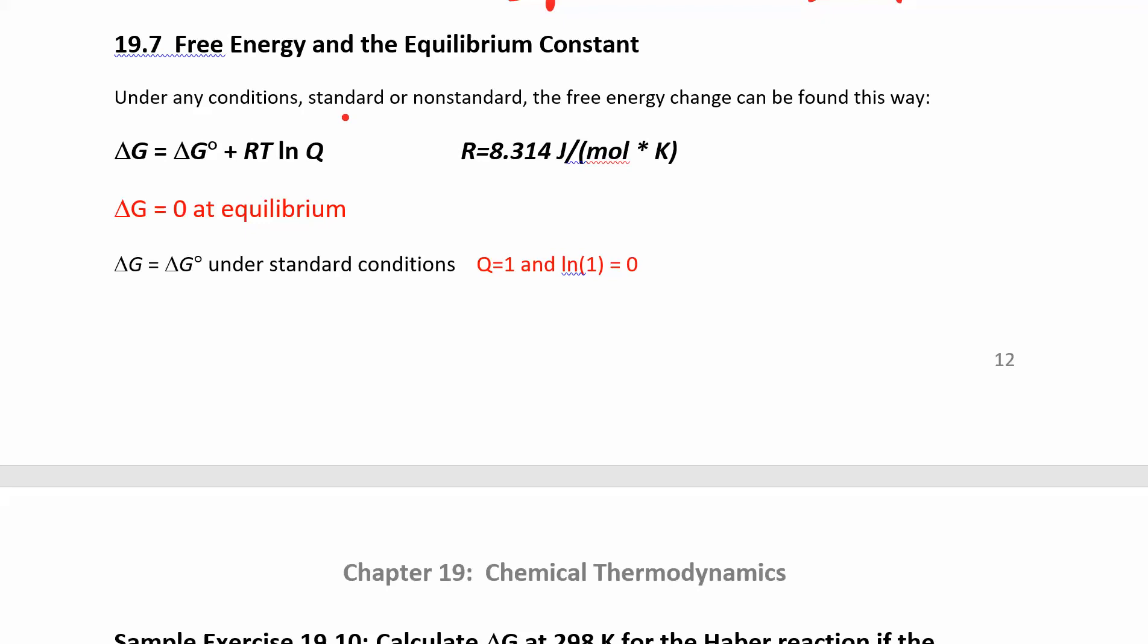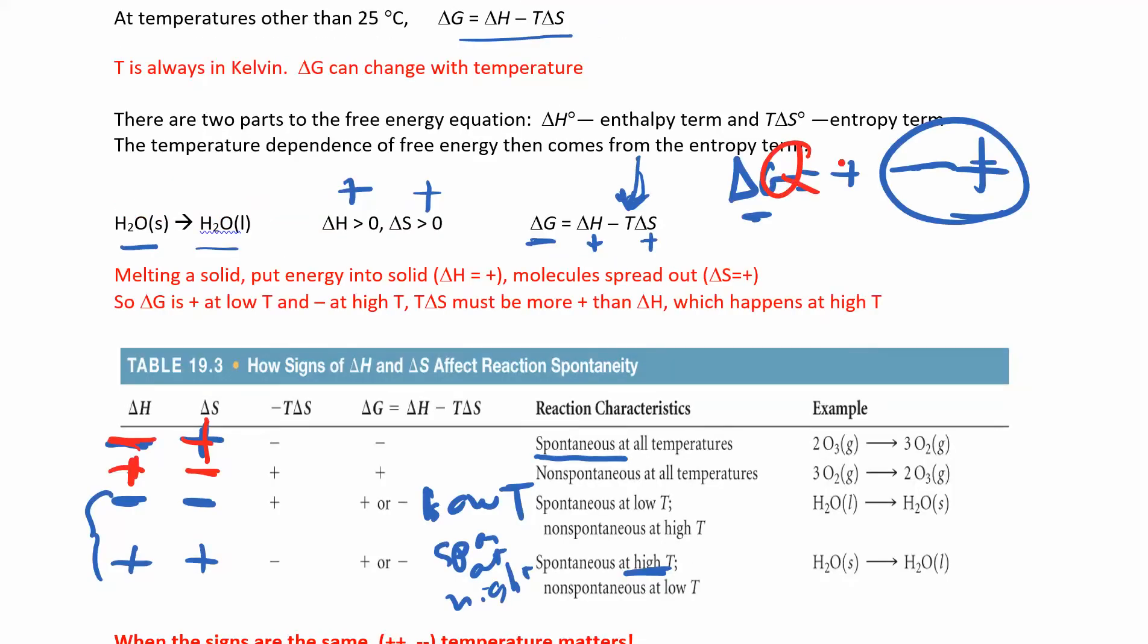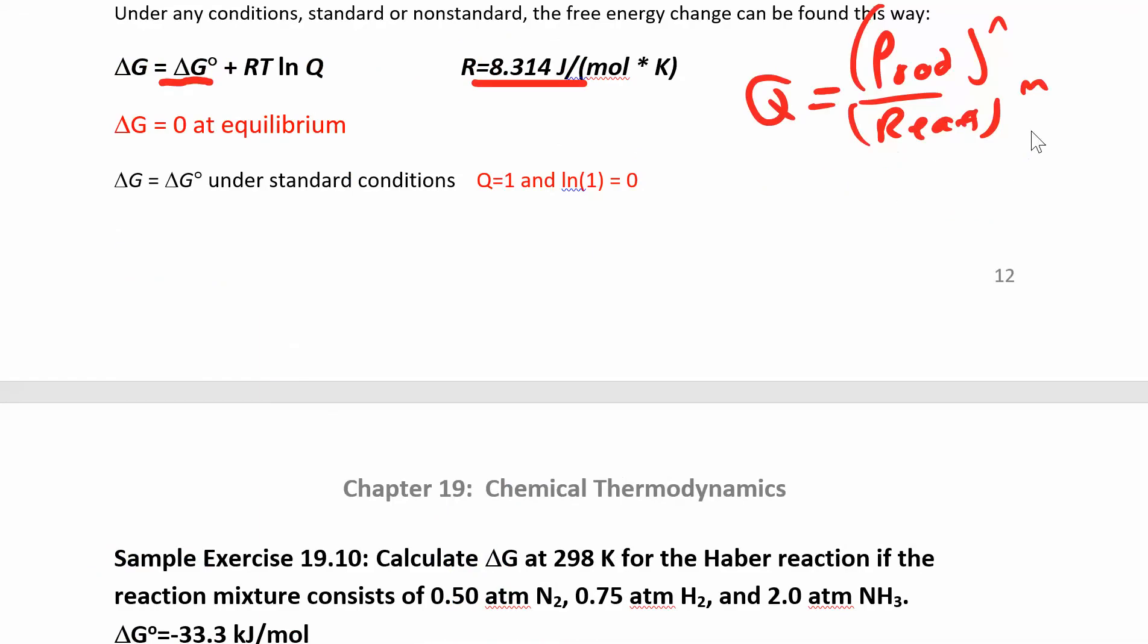If you are under non-standard conditions then Q will not be one. So you'll have to calculate a Q. Delta G is delta G naught. Delta G naught is the one that you find using a table of values or any of the ways that we looked at earlier in the chapter. R is the gas constant. T is temperature, make sure that temperature is in Kelvin. Q is products over reactants raised to stoichiometric coefficients.